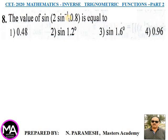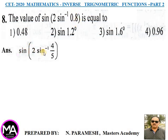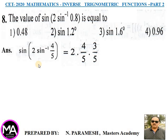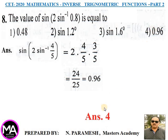Question 8: Find sin(2sin⁻¹(0.8)). Answer: 0.8 = 4/5, so sin(2sin⁻¹(4/5)). Let sin⁻¹(4/5) = θ, so sinθ = 4/5 and cosθ = 3/5. Then sin2θ = 2·(4/5)·(3/5) = 24/25 = 0.96. Option 4 is correct.